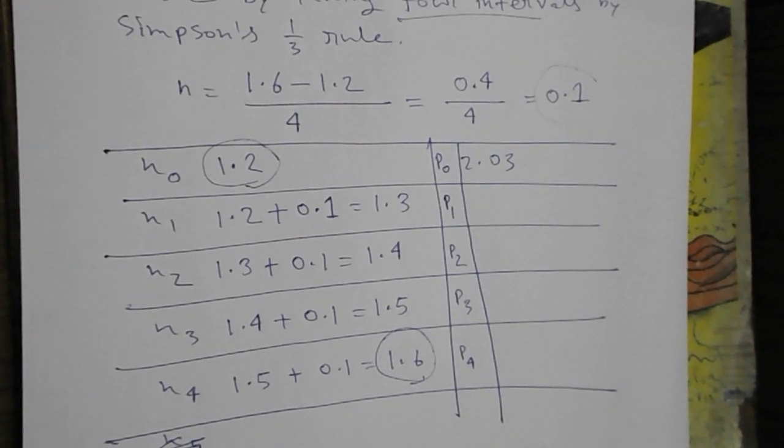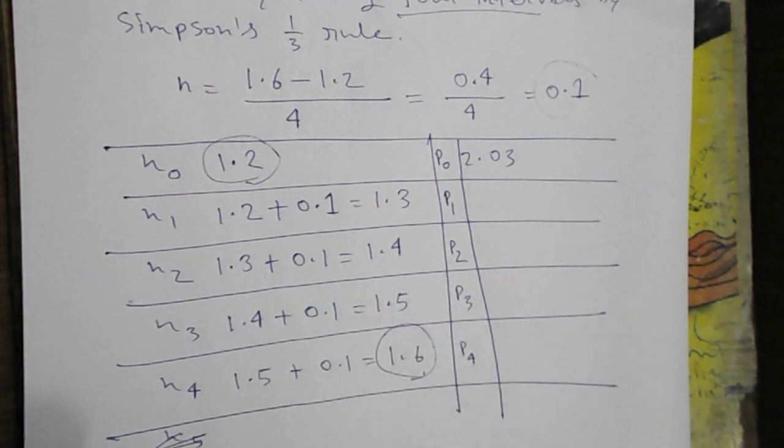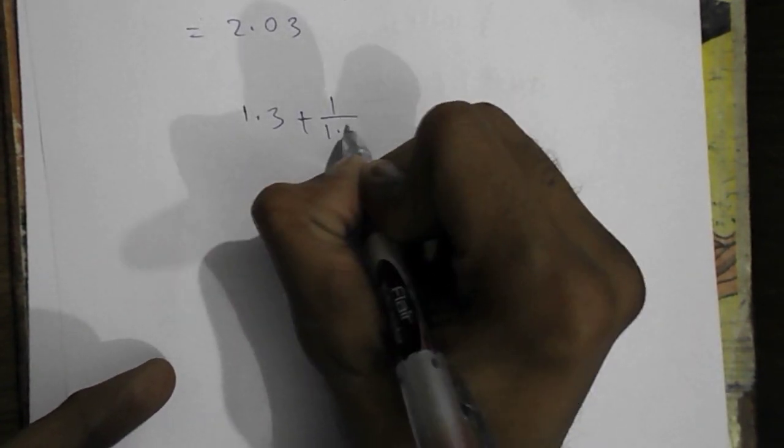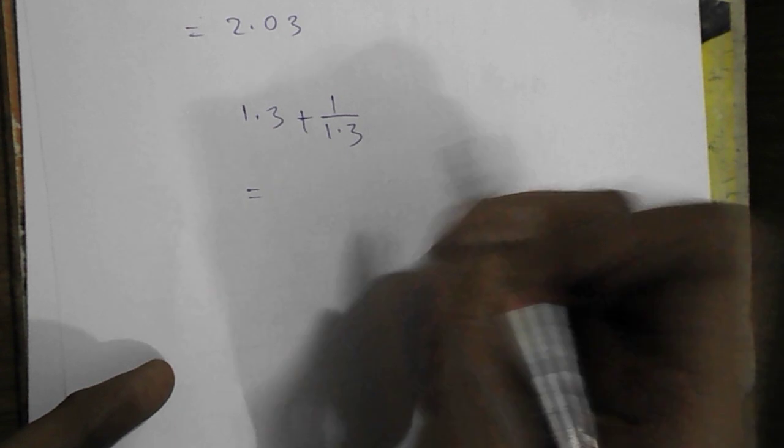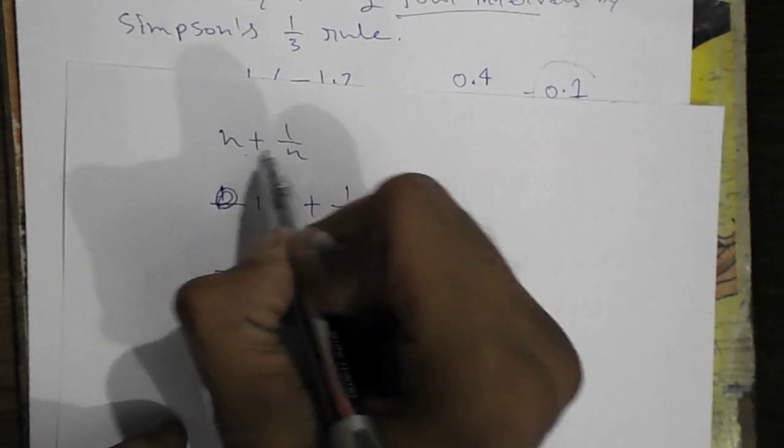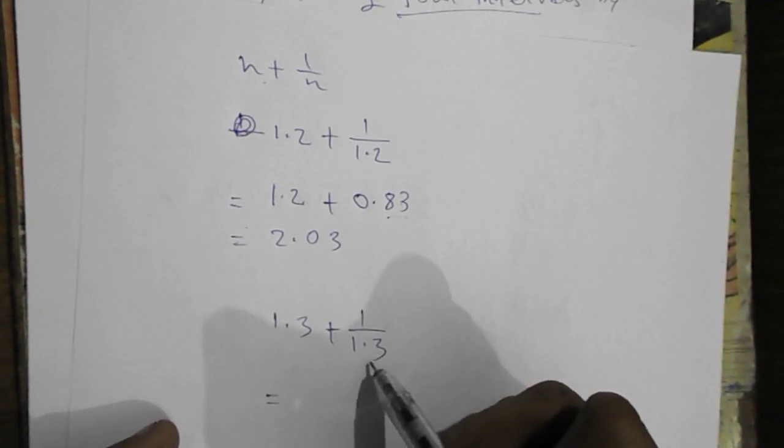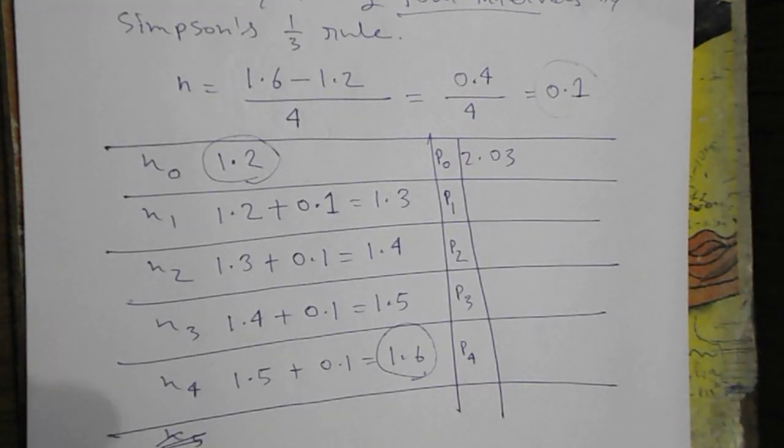So I am now calculating. Next part is our 1.3. So 1.3 plus 1 by 1.3. We have to calculate this because our main value is x plus 1 by x. x is now 1.3 and 1 by x is 1 by 1.3.